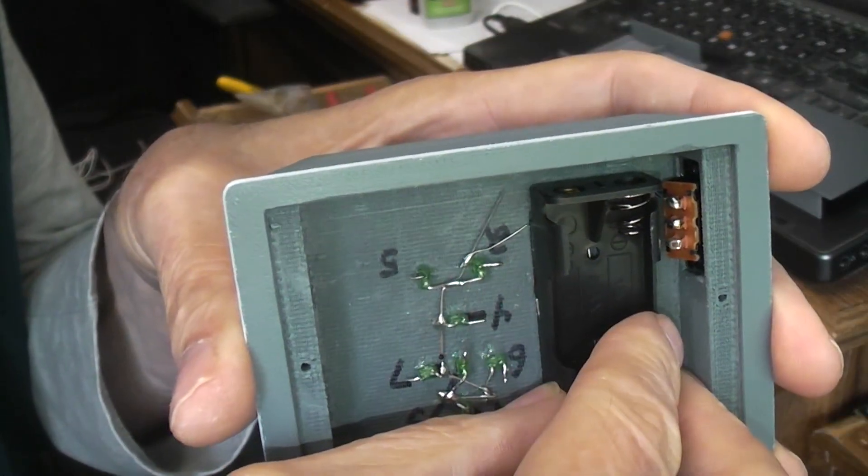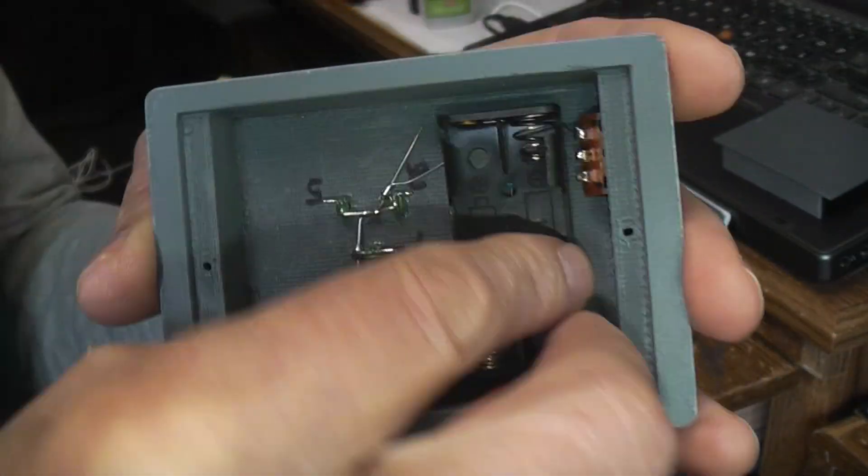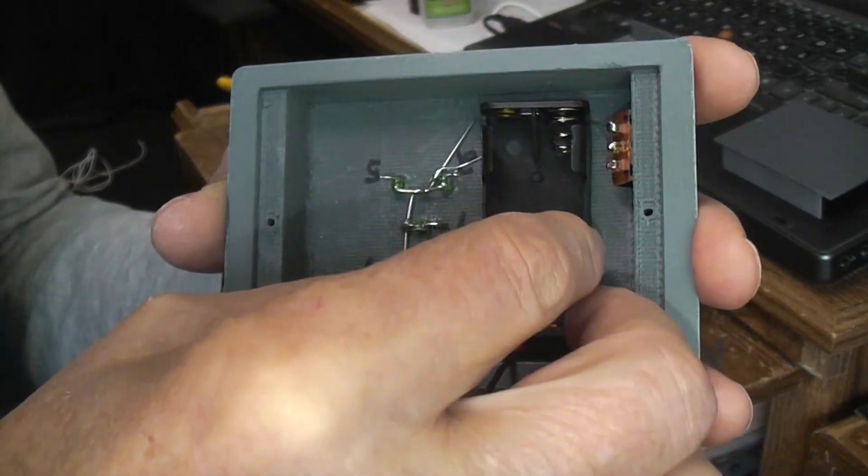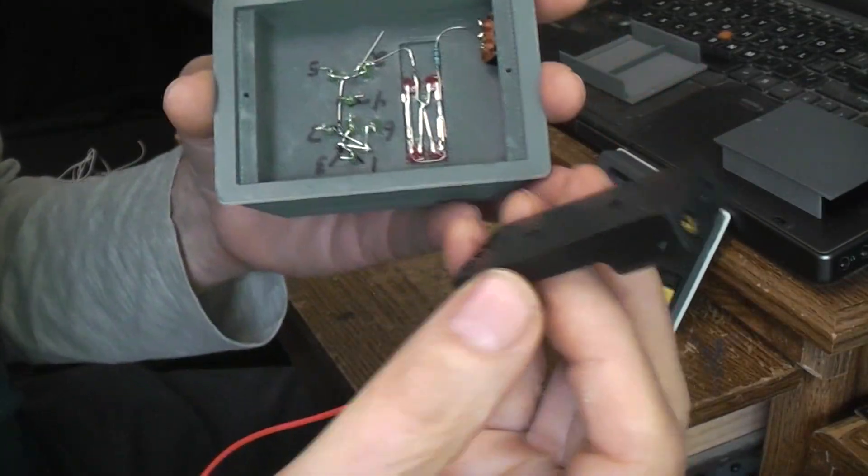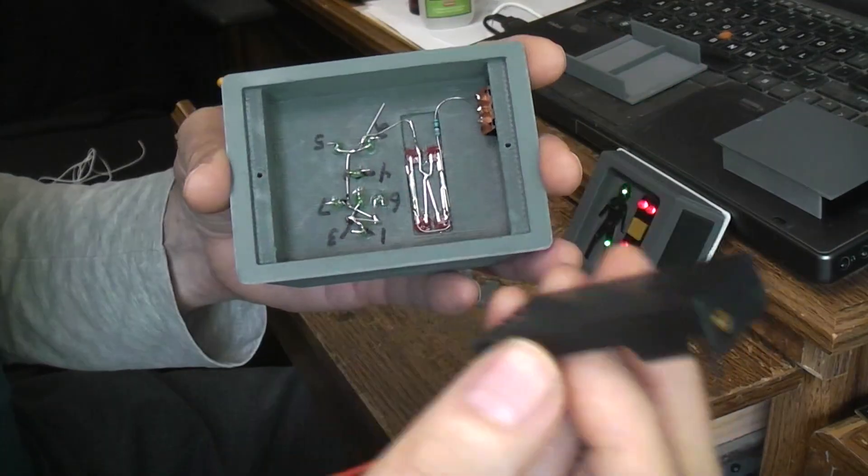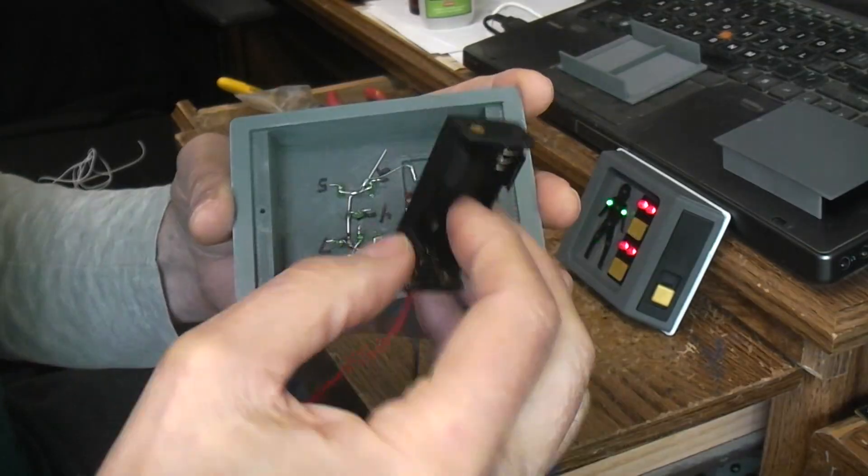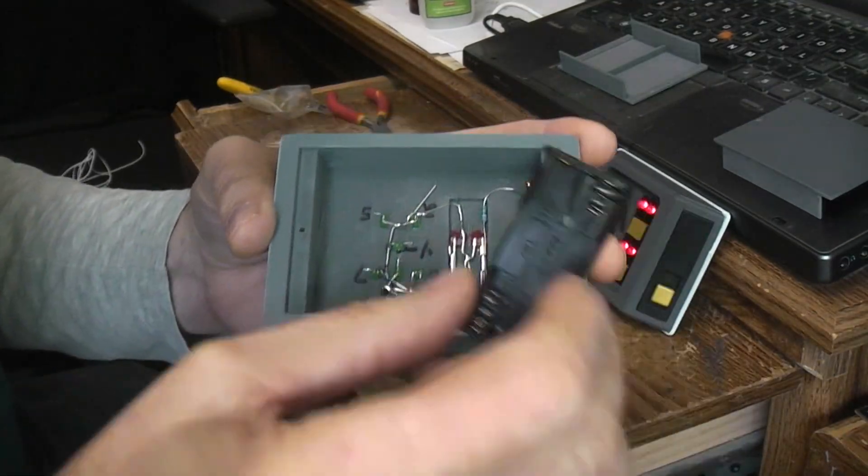Not all the way against the switch, although it wouldn't hurt anything, but just give yourself a little room. Just kind of float it around in there like that. I'm going to use the E6000 to hold that in there because it's thick and takes a while to set up.